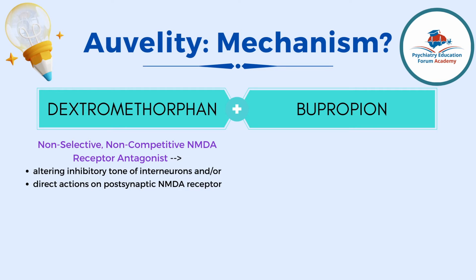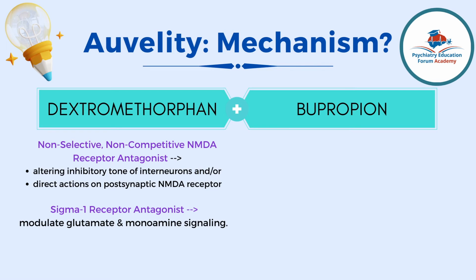Dextromethorphan appears to be the main active agent in Auvelity, but it has other mechanisms as well. First is NMDA receptor antagonism. Second, it is also a sigma-1 receptor agonist. There is substantial research showing that sigma receptors have potential for antidepressant use, as sigma-1 activity produces rapid modulation of the serotonergic system in the dorsal raphe nucleus and glutamatergic transmission in the hippocampus. Antagonizing the sigma-1 receptor boosts both glutamate and monoamine signaling.